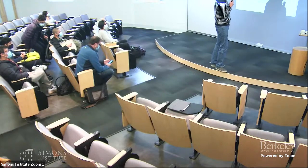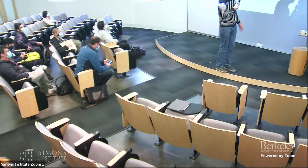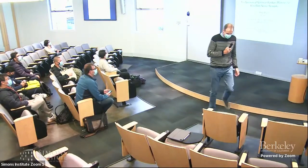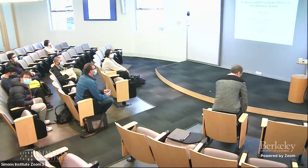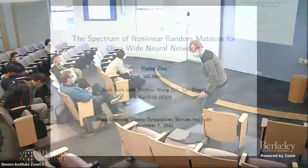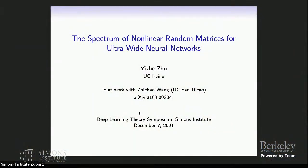Yixi Zhu, who's at UC Irvine and actually in Berkeley this semester. Thank you for the introduction. I'm very happy to be here. Currently I'm working at MSRI, so it's very convenient to come down to Simons. Today I will talk about a joint work with Zhichao Wang, a PhD student from UCSD, about the spectrum of nonlinear random matrices for ultrawide neural networks.